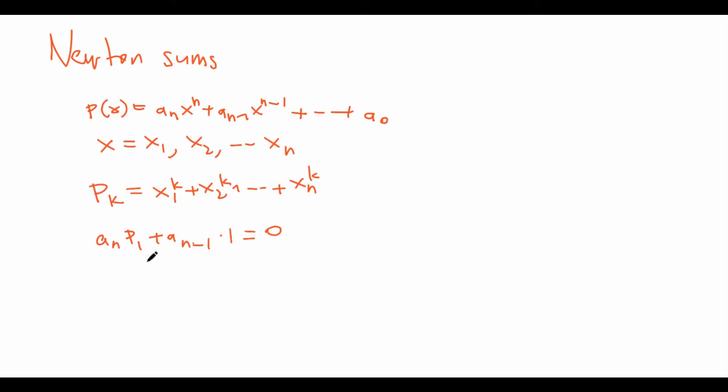But it starts to differ at this point. The next equation is a_n*P_2 plus a_{n-1}*P_1 plus a_{n-2} times 2 is equal to 0. So now you see why I did a times 1, because the next pattern is times 2.